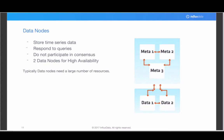Data nodes store the actual time series data — measurements, fields, and tags. Data nodes are the nodes that respond to and receive data queries. They don't participate in strong consensus for things like users and continuous queries; if they need that information, they call out to the meta service. To have a highly available cluster, you must have at least two data nodes. Data nodes do need significant resources — you want 1000 IOPS SSDs, 30 to 128 GB of RAM, and 16 cores.